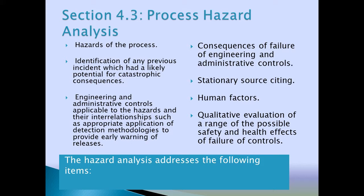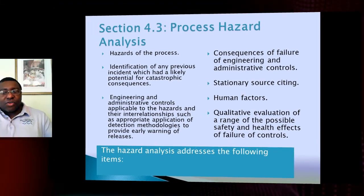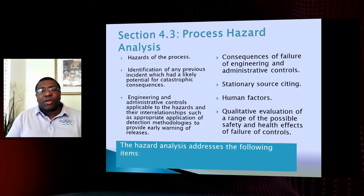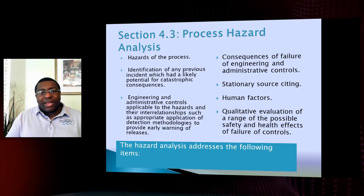The hazard analysis addresses these items: it's going to address the hazards of dealing with whatever your chemical is on the regulated list. It's going to identify any previous incidents — that's why the risk management plan asks for a five-year history. Then after you start identifying these things, the next step is to figure out how you're going to control the hazard. The number one way is by engineering it out.